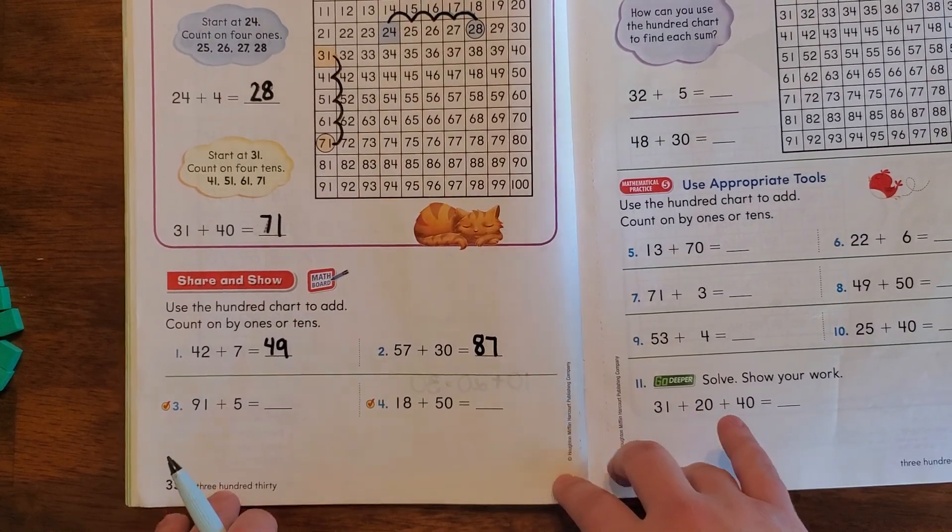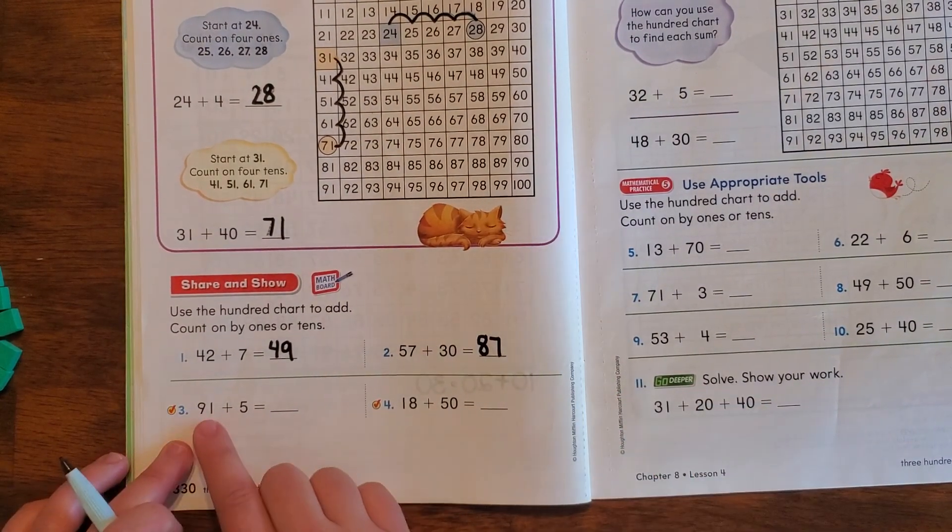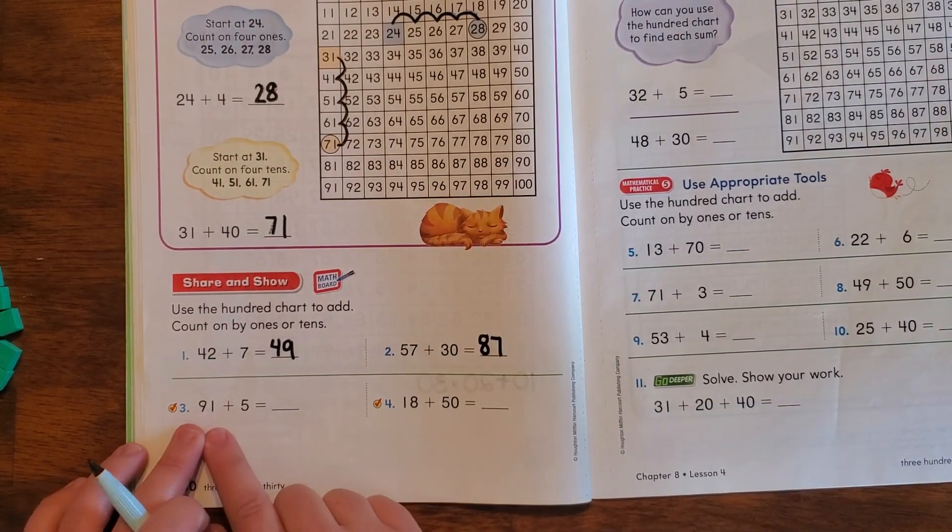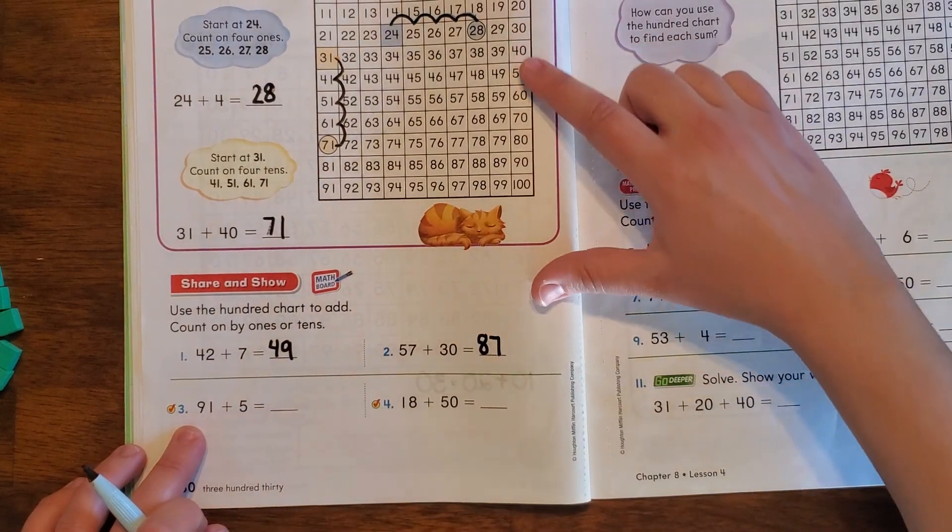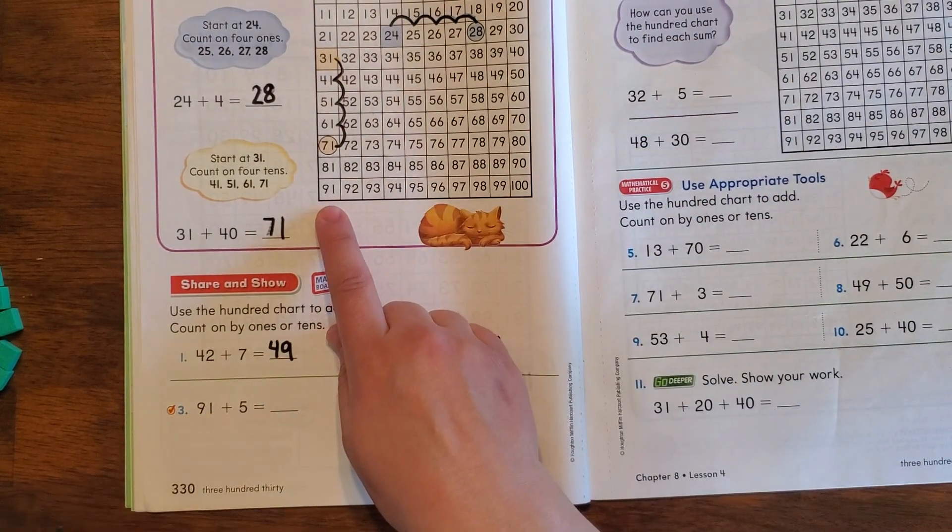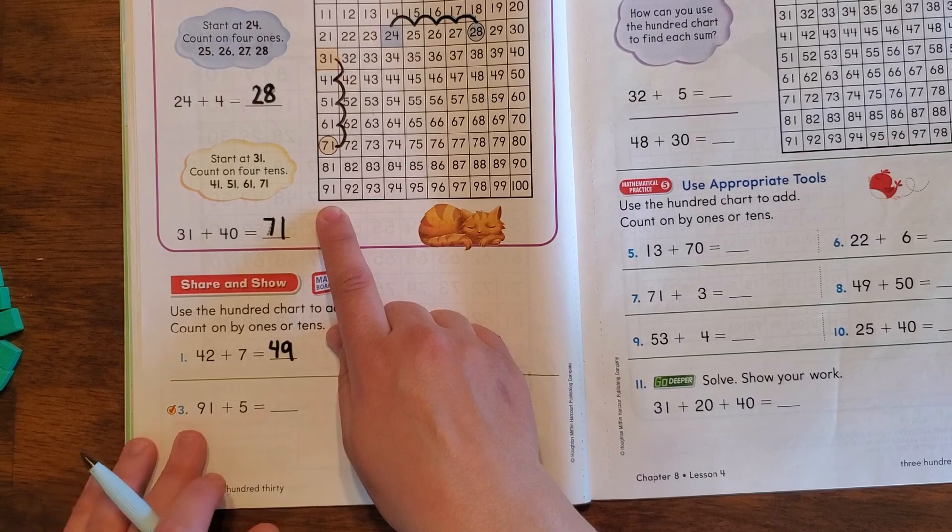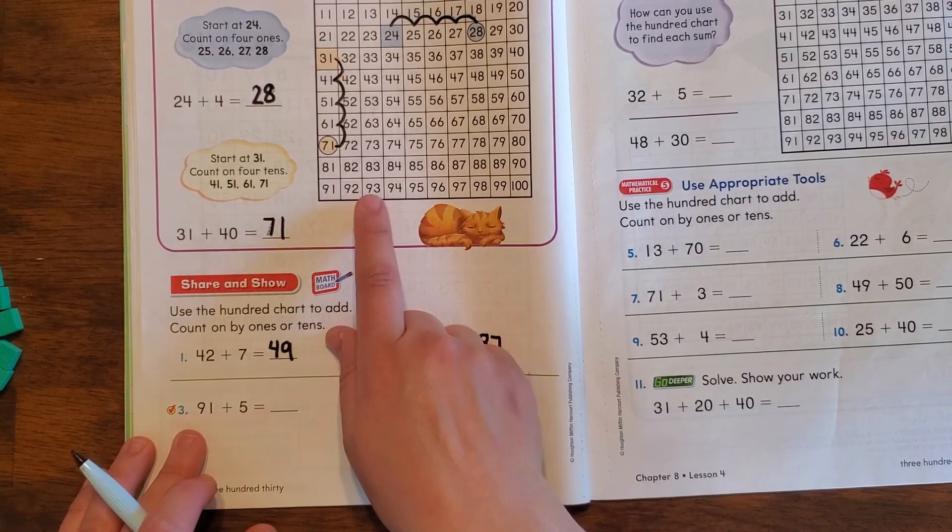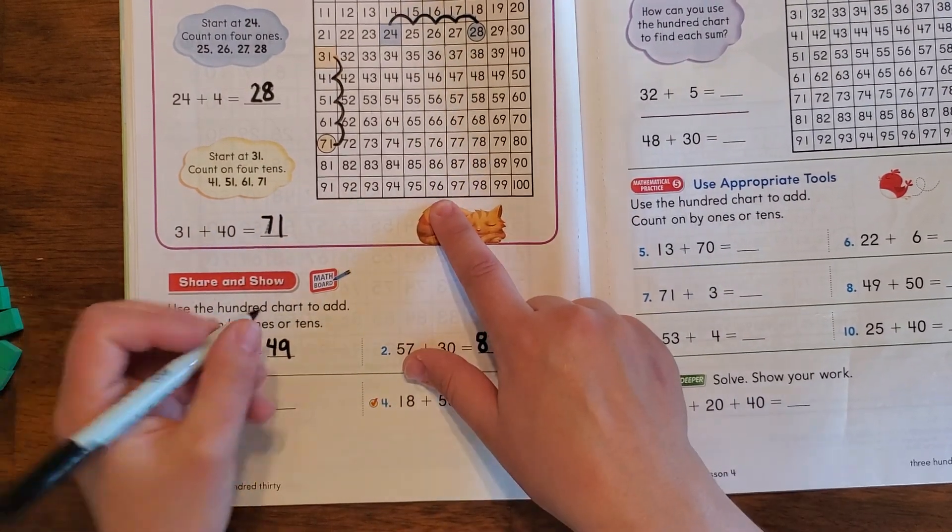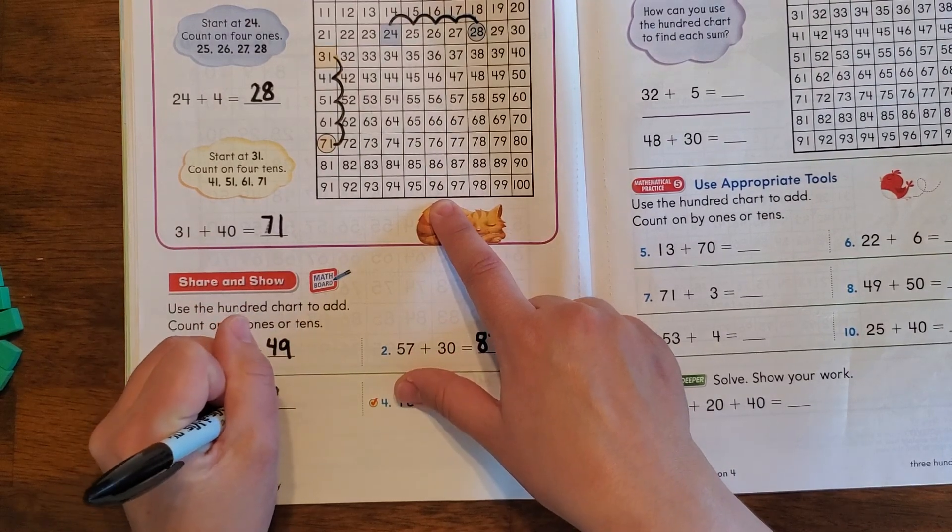And let's go ahead and do number 3, so 91 plus 5 more. So here's 91, and then we go 5 more: 1, 2, 3, 4, 5. We end up on 96.